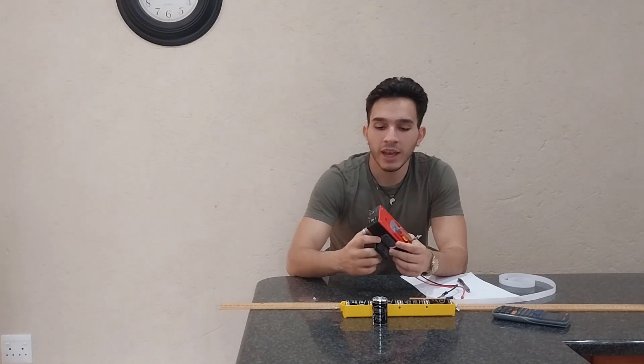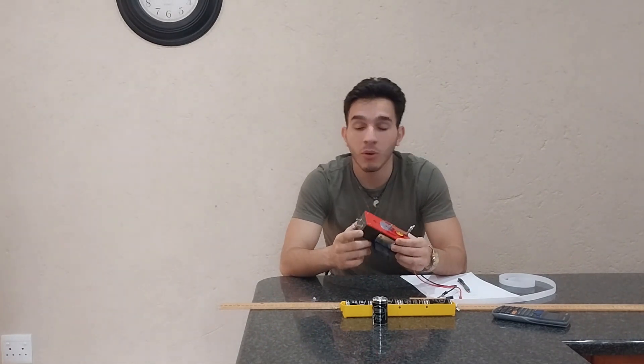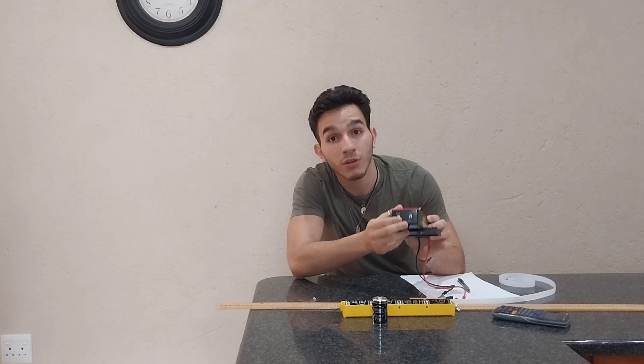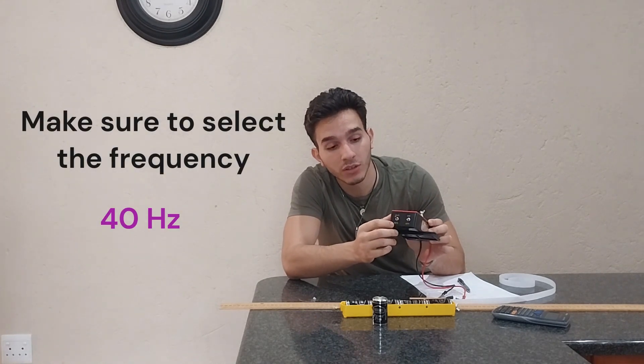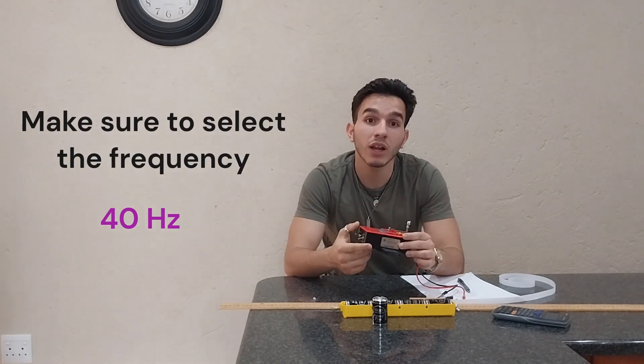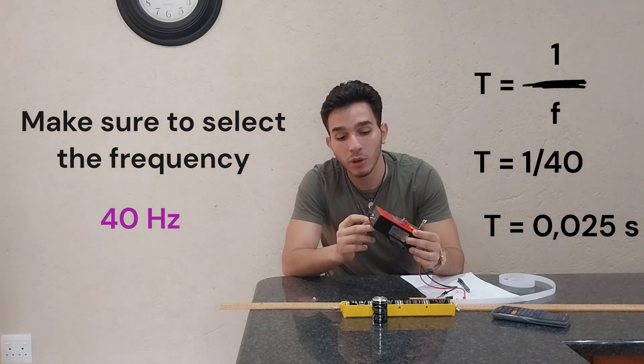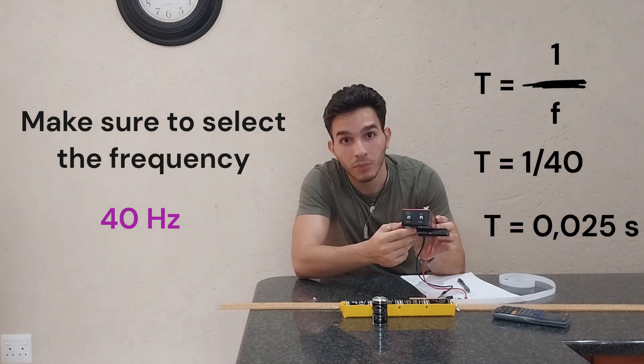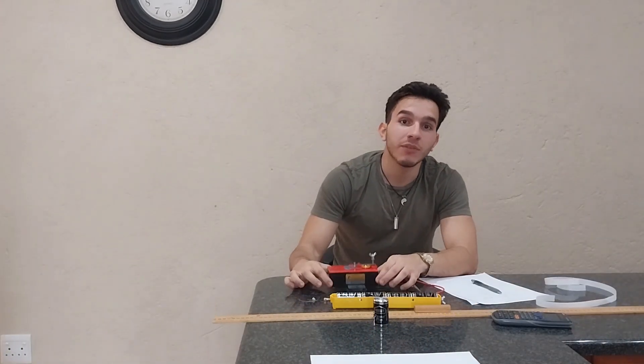Here is a ticker timer which has two different frequencies: 25 hertz and 40 hertz. We need the frequency to calculate the period, so we're going to choose the 40 hertz. Now we're going to check if the ticker timer is working.